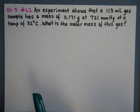This problem is dealing with the density and using density in the combined gas law, a derivative of PV equals nRT.